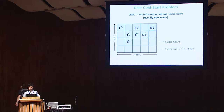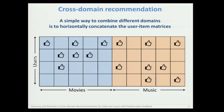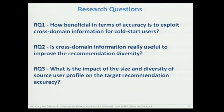I guess you already know what the user cold start problem means. In this work, we also consider the extreme cold start situation, namely when there is no information at all about some users. A possible solution to face the lack of information in the target domain is to use information in a related auxiliary domain. A simple way to combine different domains is to horizontally concatenate the corresponding user matrices, as shown in this slide. As research questions, we ask how beneficial it is to use cross-domain information for cold start users in the positive-only feedback scenario, and we consider the same question in terms of diversity, since diversity is an important key factor for the user experience.